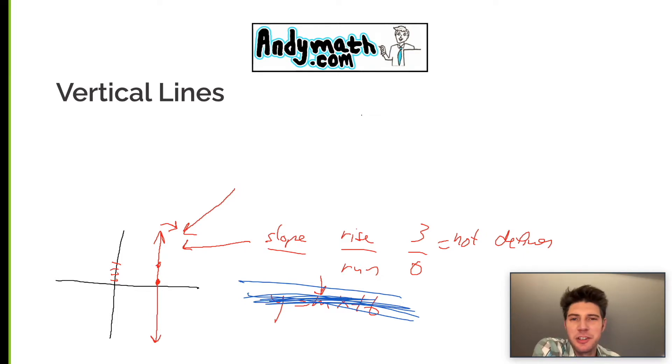But there is still a way to write an equation for it. We just say x equals whatever number it is—one, two, three, four, five. This would be x equals five right here. So this is how we write the equations for vertical lines: x equals whatever the x-intercept is. Another way you can think of it is this point right here is (5,1).